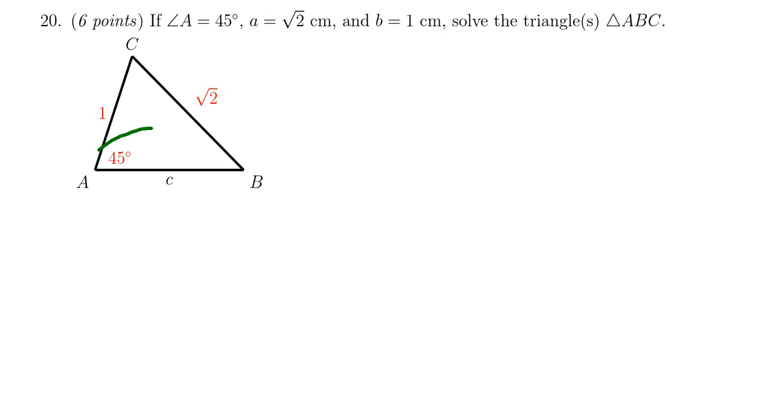Since we have angle A and side length a, we have this angle-opposite-side pair, so I'm going to use the law of sines to solve for this triangle. My target is angle B. By the law of sines, we get that sin B over 1 equals sin 45° over √2.